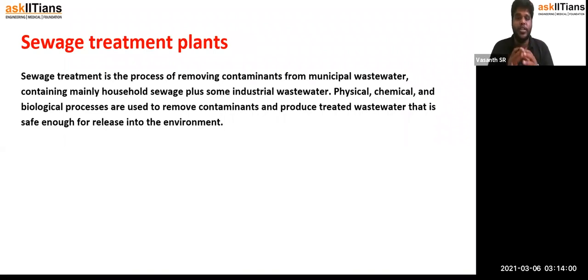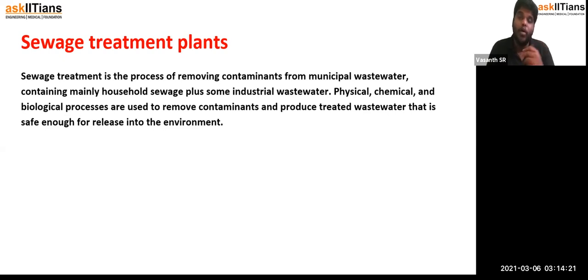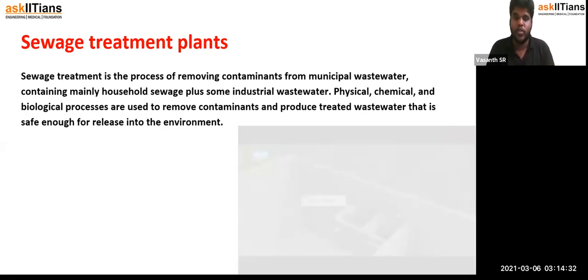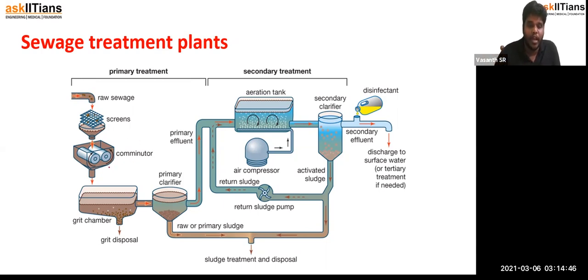Now, sewage treatment. Sewage is a most important topic you should know about — how the municipality processes the sewage that drains out of every home. This wastewater — sewage — should be processed physically, chemically, and biologically. In the physical process, the raw sewage undergoes screening using a mesh-like structure to segregate solid material. Then a crusher grinds the material into smaller particles, and the solid grit is drained while water accumulates.